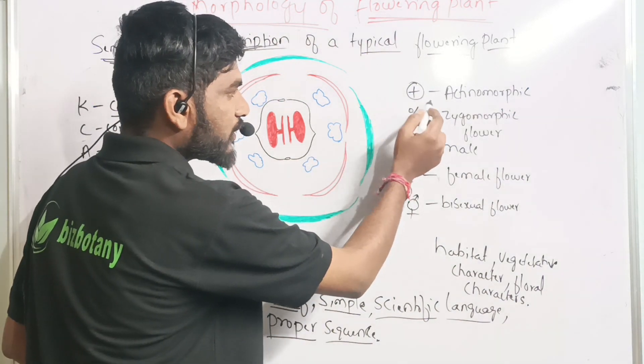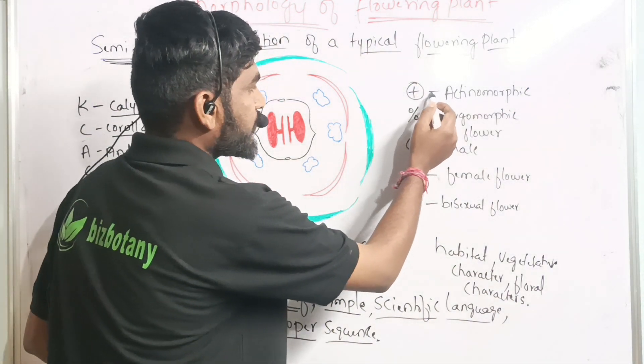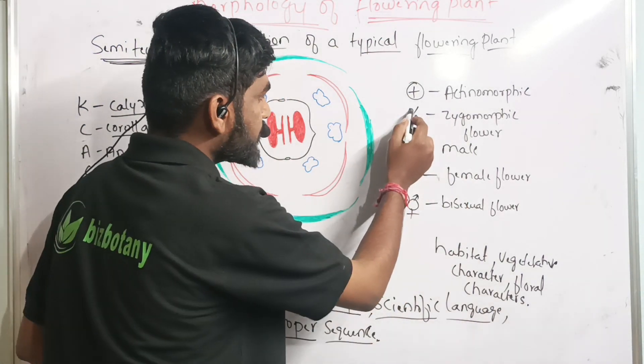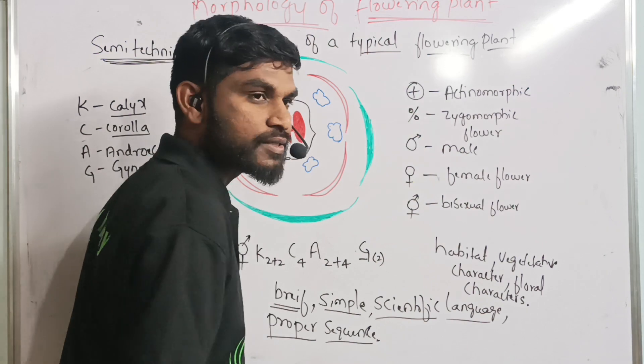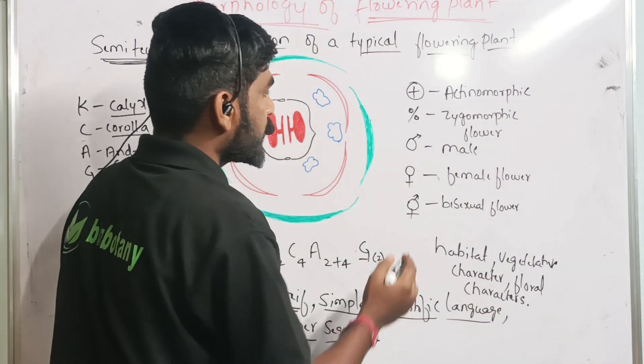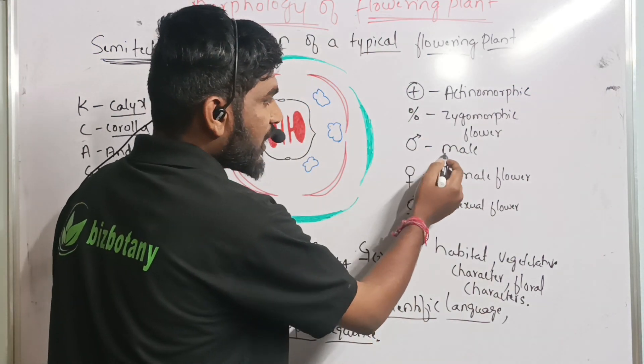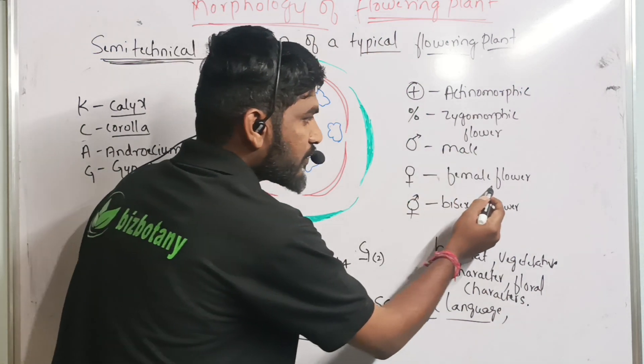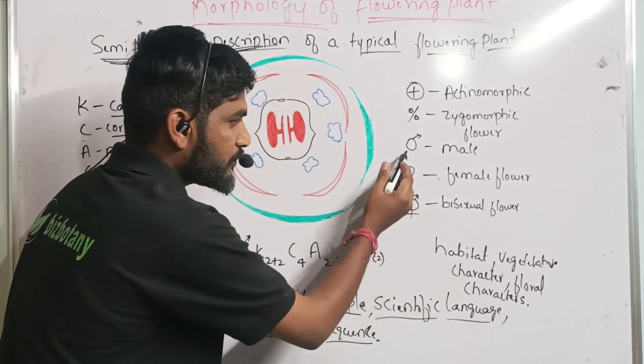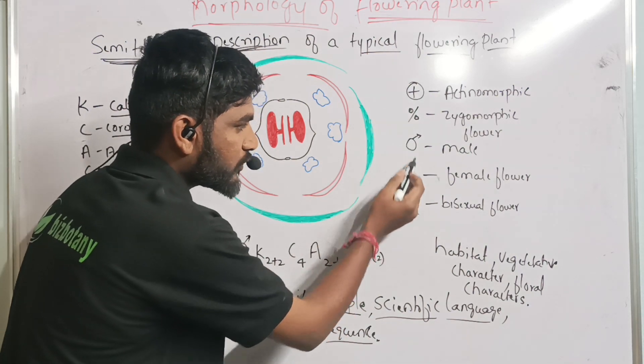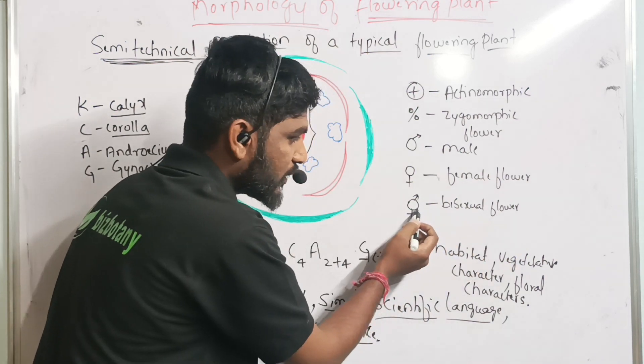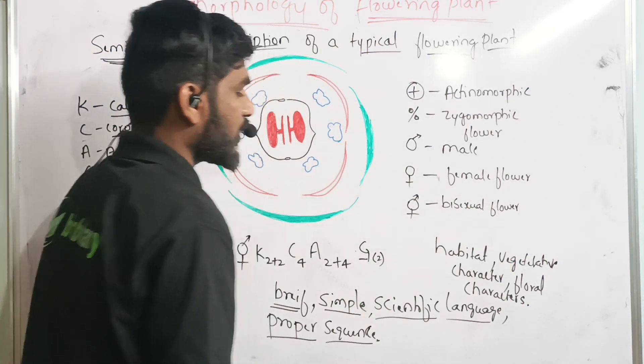This symbol, plus symbol with a circle, stands for actinomorphic flower. And this percentage-like symbol stands for zygomorphic flowers. This symbol indicates the male flower, and this one indicates the female flower. The symbol which contains both female and male flowers, we call it as a bisexual flower.